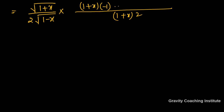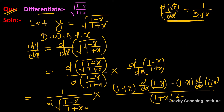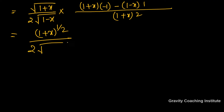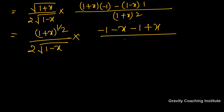Differentiating (1+x) gives 1. So we can write: (1+x)^(1/2) upon 2·√(1-x). Multiplying -1 through both terms in the numerator gives: minus(1+x) minus (1-x), which simplifies, and we have [−(1+x) − (1−x)] over (1+x)², giving minus 2 in the numerator.